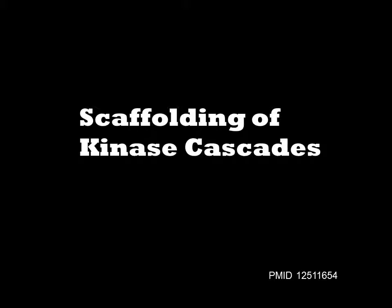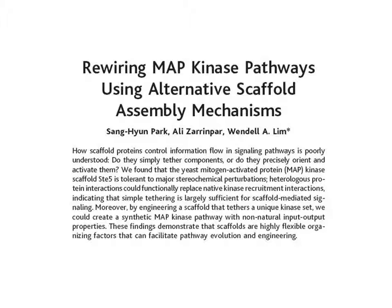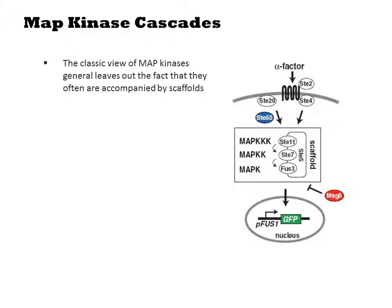The dynamic crosstalk of signal transduction cascades is a subject of great interest to biologists. At the molecular level, there have been questions about how specificity amongst MAP kinases is determined. In this study, Lim and co-workers demonstrate how the scaffolding of kinase proteins directs phosphorylation amongst a set of kinases. We are accustomed to seeing diagrams that describe a cascade of interactions involving MAP kinases such as ERK. This classic view of MAP kinase cascades generally leaves out the fact that they are often accompanied by scaffolds.